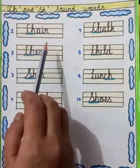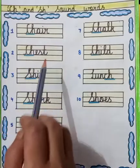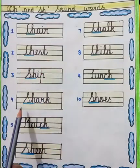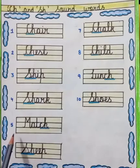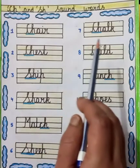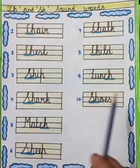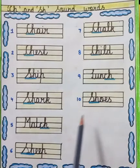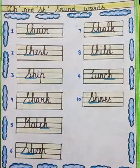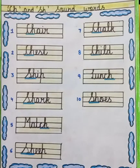Chair, chair, chest, ship, ship, shark, shark, match, sheep, chalk, chalk, child, child, lunch, shoes, shoes. I hope kids these CH and SH sound words are clear to you. We will soon meet with a new topic and you have to do this in your English notebook. Stay safe, stay healthy and do practice it at your home.